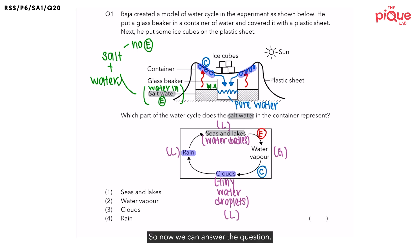So now we can answer the question, which part of the water cycle does the salt water in the container represent? It actually represents the seas and lakes. So therefore, the answer for this question is option number one.